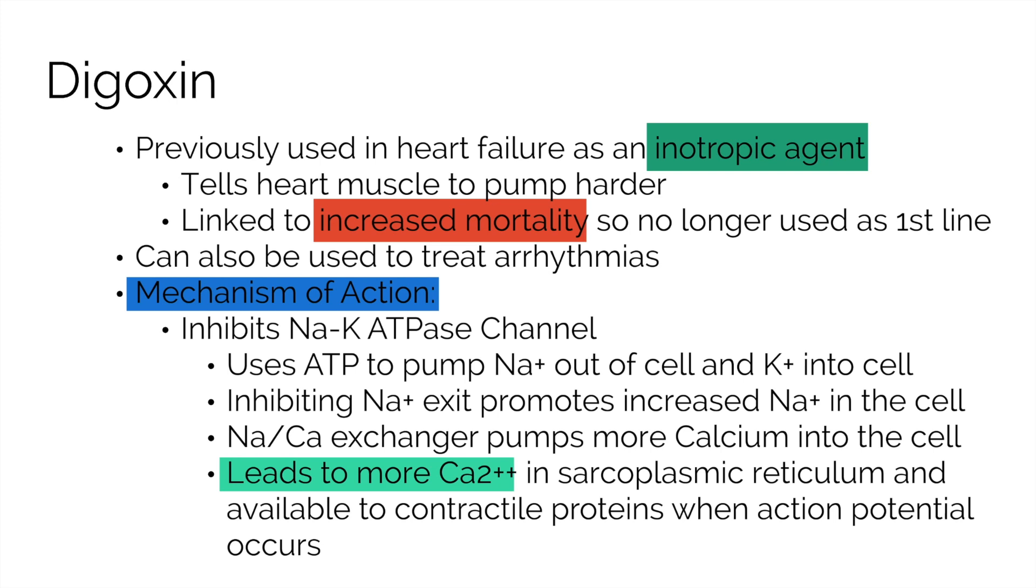Digoxin works by blocking a sodium-potassium ATPase channel. The sodium-potassium ATPase pumps two sodiums out of the cell and three potassiums into the cell. This transporter requires ATP or energy to do this as a channel is pumping these ions against their natural concentration gradients. Since digoxin inhibits the ATPase, the intracellular concentration of sodium increases.